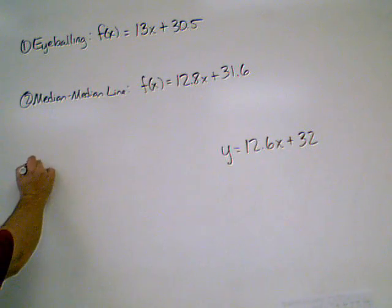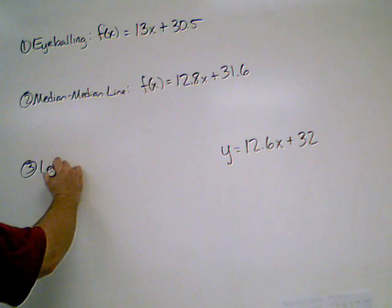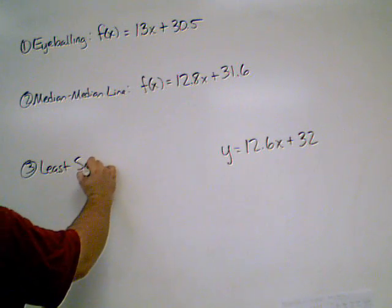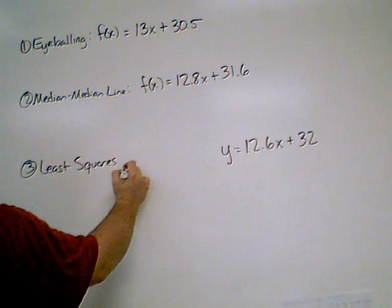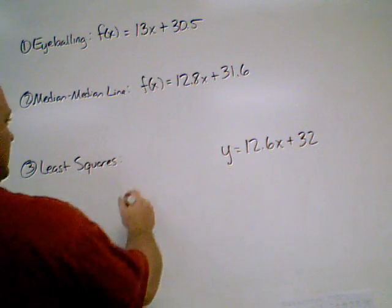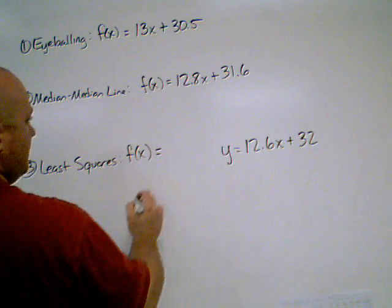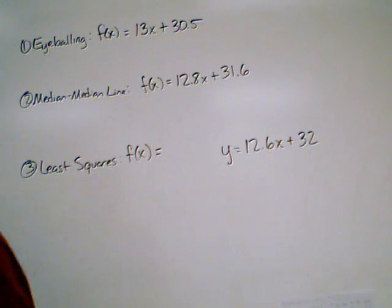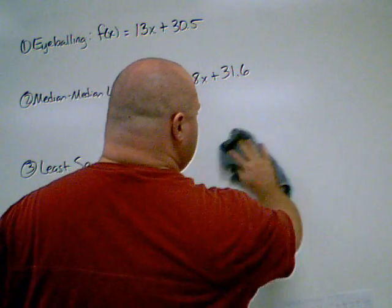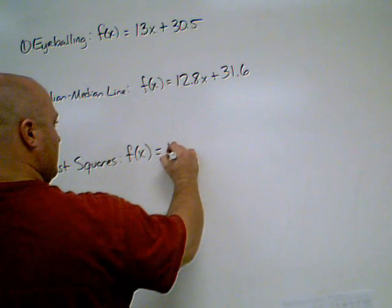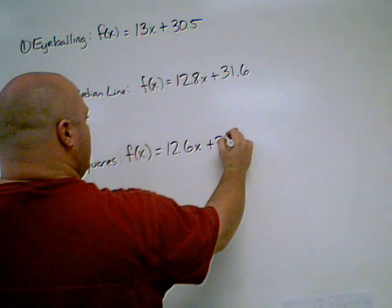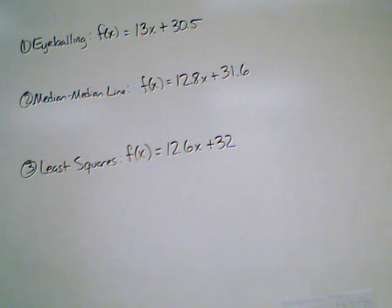This is the third one. This is what we just came up with. It's the least squares method. I'm going to also change it to function notation as well. So I have my three equations.